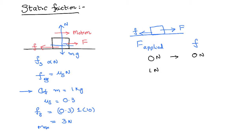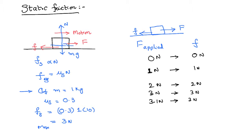If you have applied 1 newton, the frictional force also becomes 1 newton and the body remains in the state of rest. If you have applied 2 newton, frictional force also becomes 2 newton and the body is kept in the state of rest. If you have applied 3 newton, frictional force at best can only become 3 newton — it stops there. Now if there is an extra force beyond 3 newton, the body starts moving in the direction of that extra applied force.